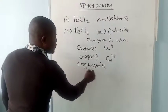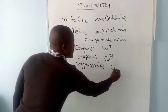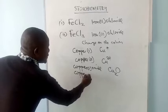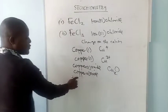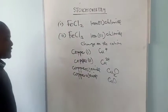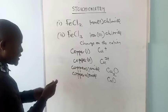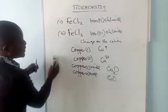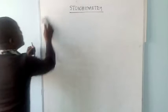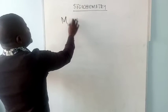For copper(I) oxide, we swap the valences to get Cu₂O. Then for copper(II) oxide, copper has a valence of 2 and oxide also has a valence of 2, so the formula is CuO. It is very important to specify the charge when dealing with a transition metal. We can write the formula as long as we know the charge on the cation and anion.